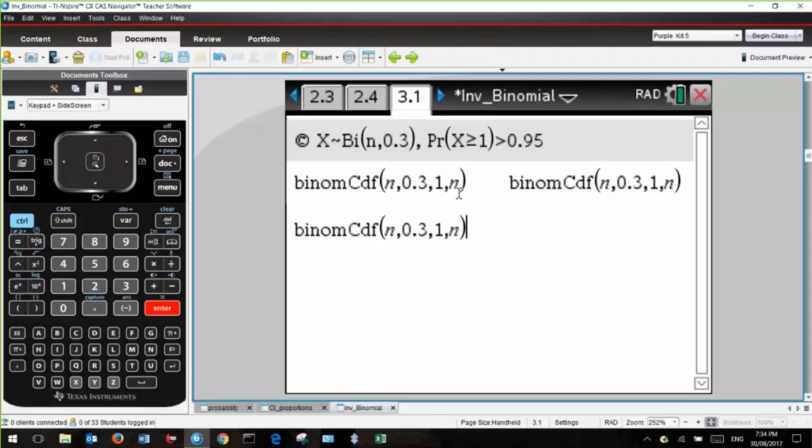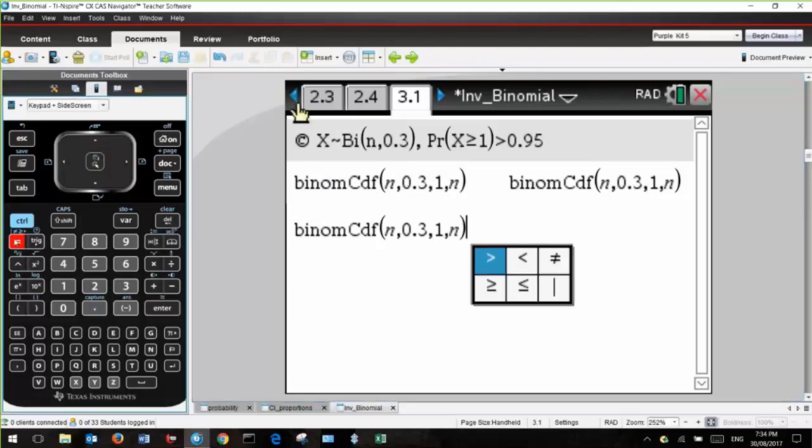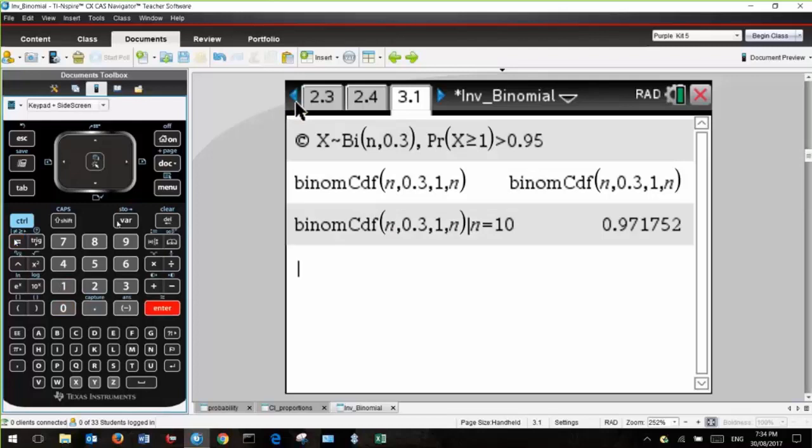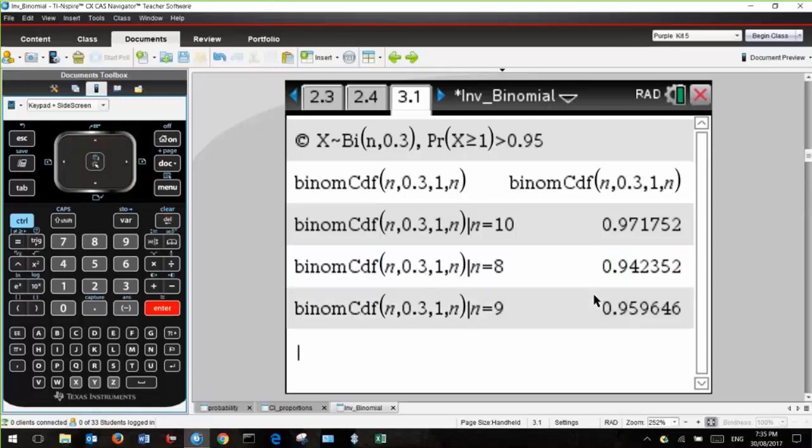0.97, so that certainly exceeds 0.95, but is it the least value? I don't know. Let's try 8. 8 is too small. Let's try in between. So 9 seems to work. 9 is the smallest value where the probability that X is greater than or equal to 1 exceeds 0.95.